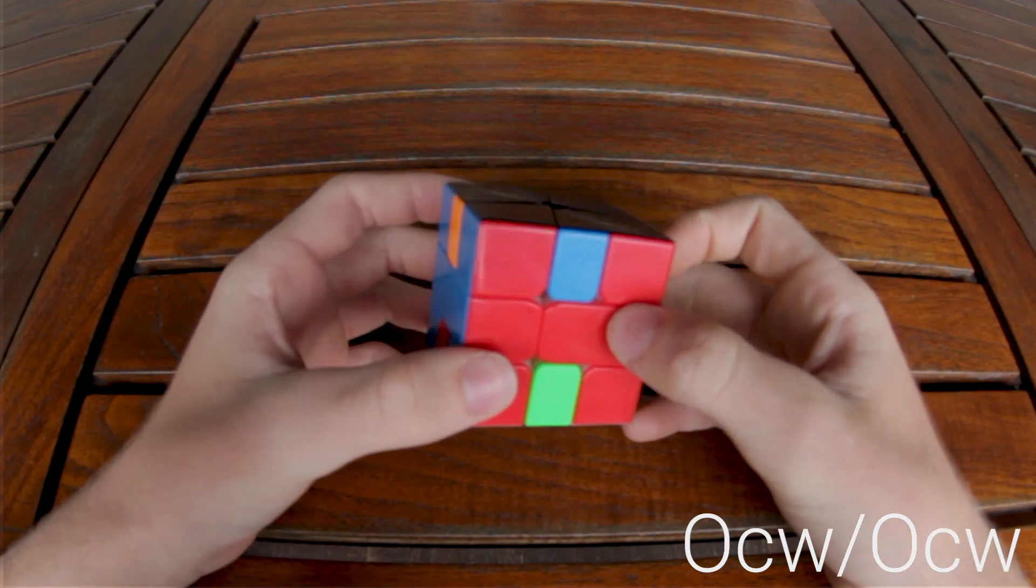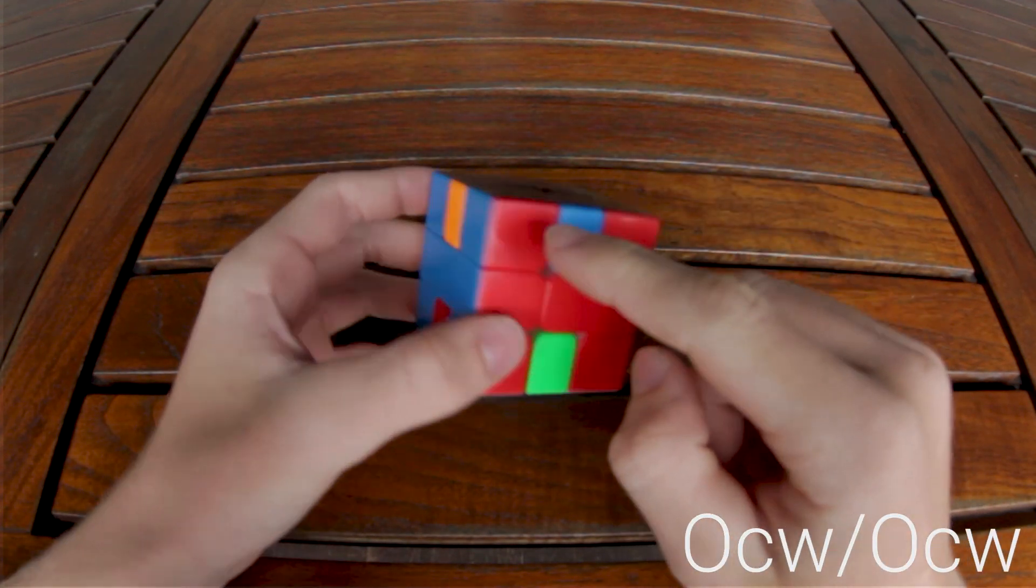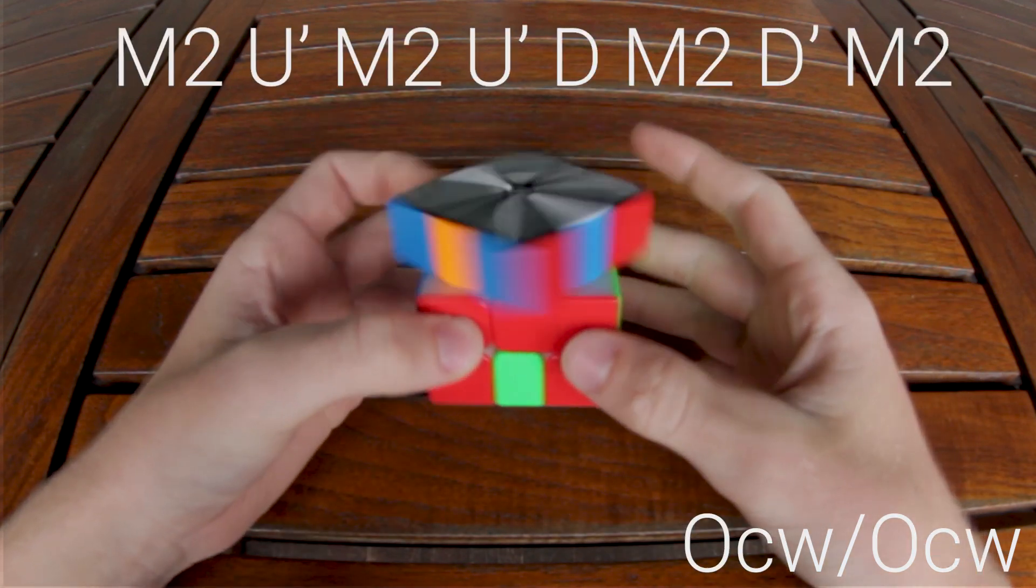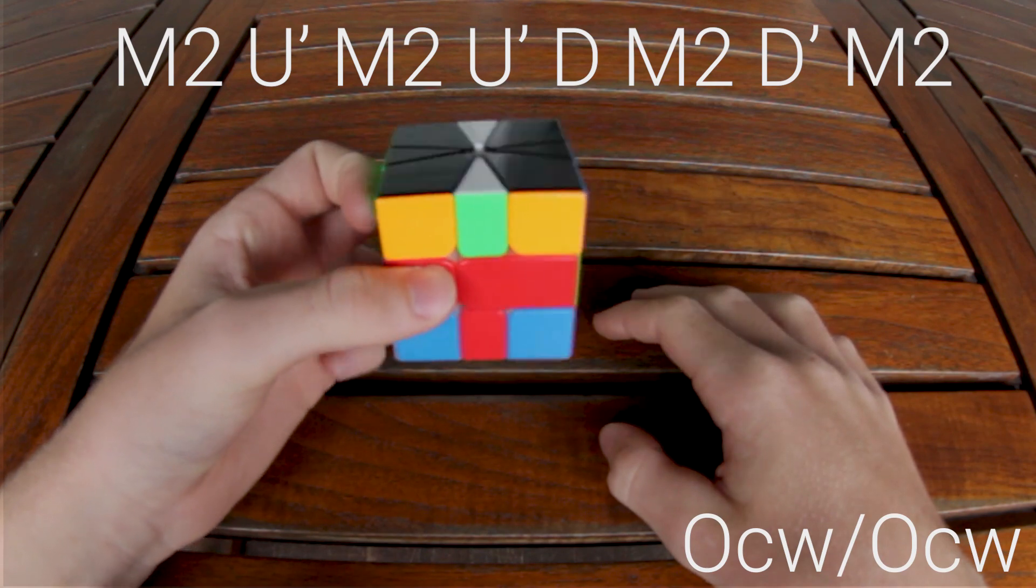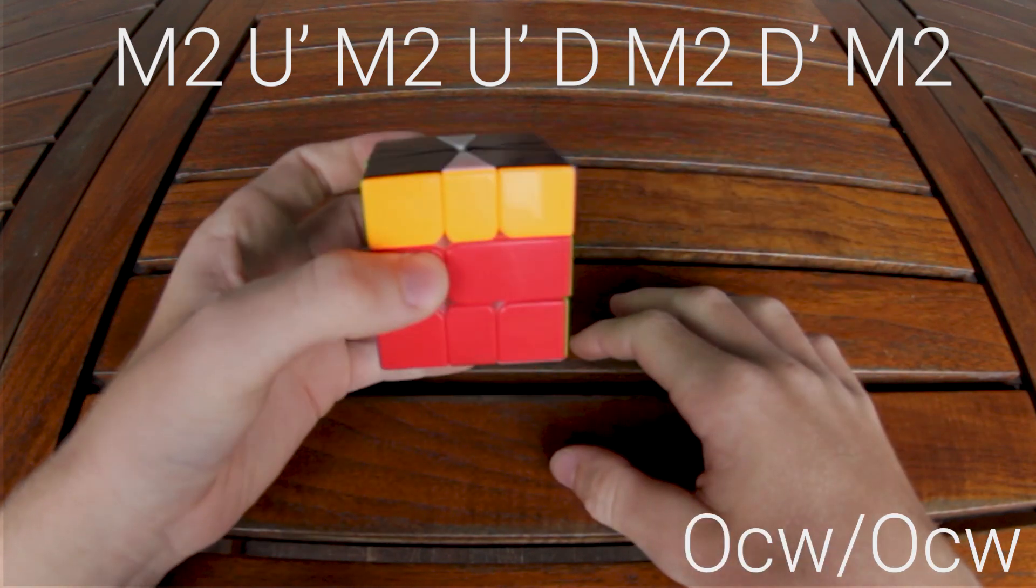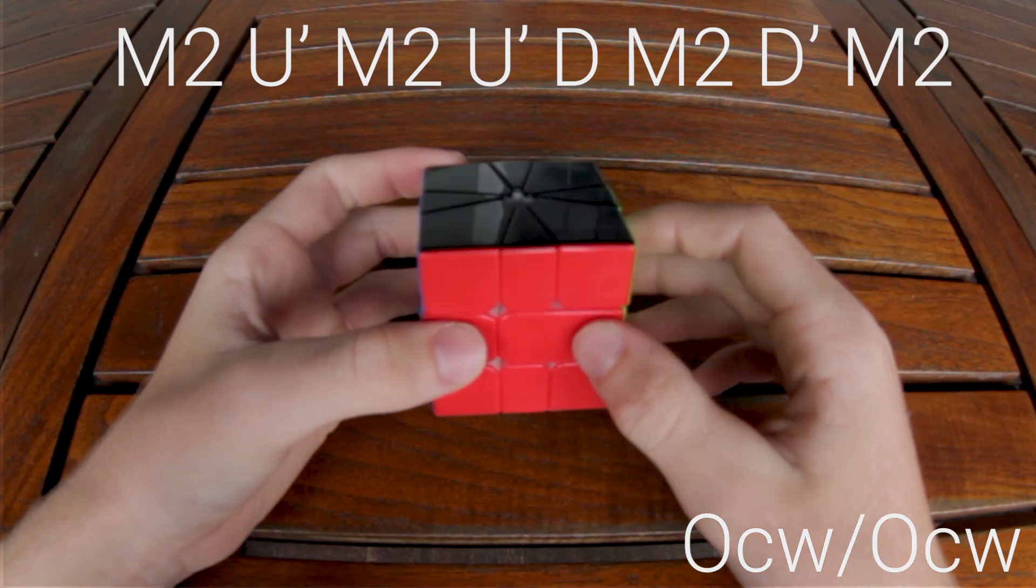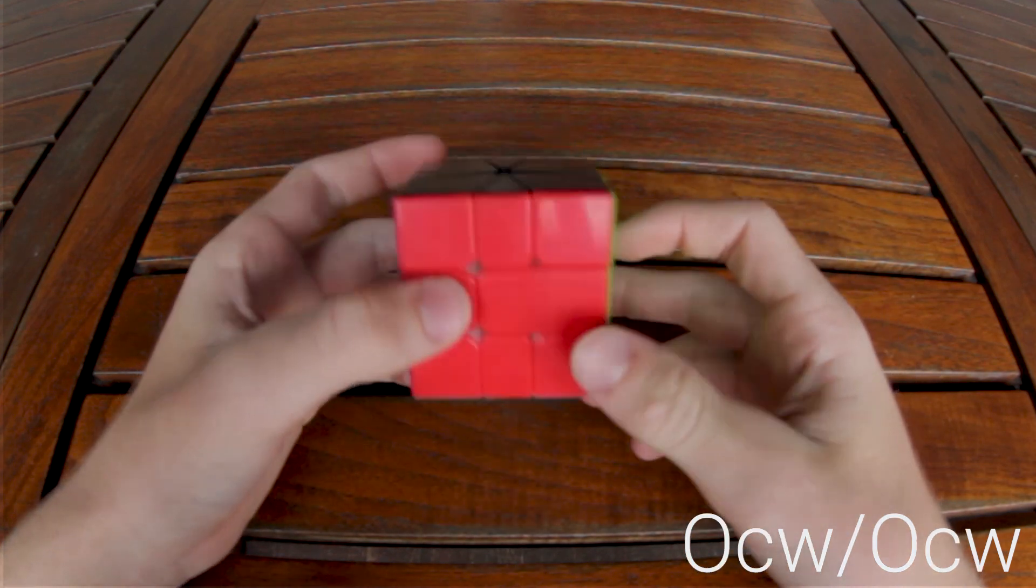The same thing for the opposite direction. The blue is going to the left, so the U move will be going to the right. M2, U prime, M2, U prime, D, M2, D prime, M2. There's no mirrors for this because it's symmetrical.